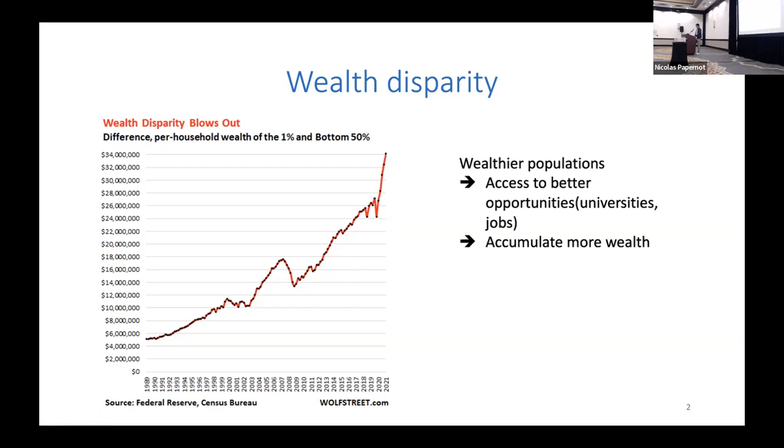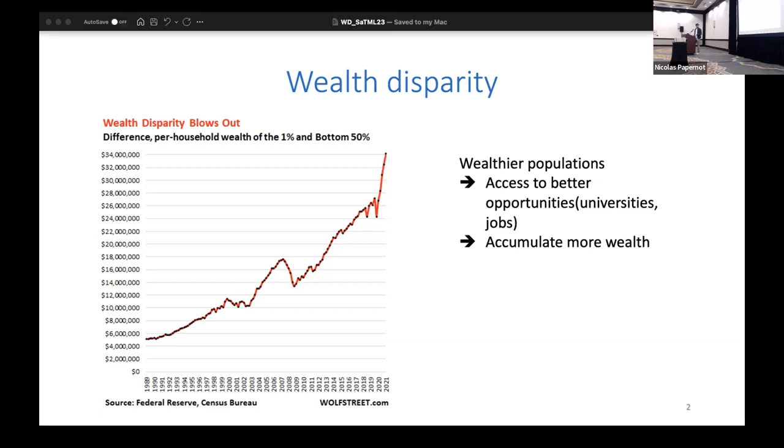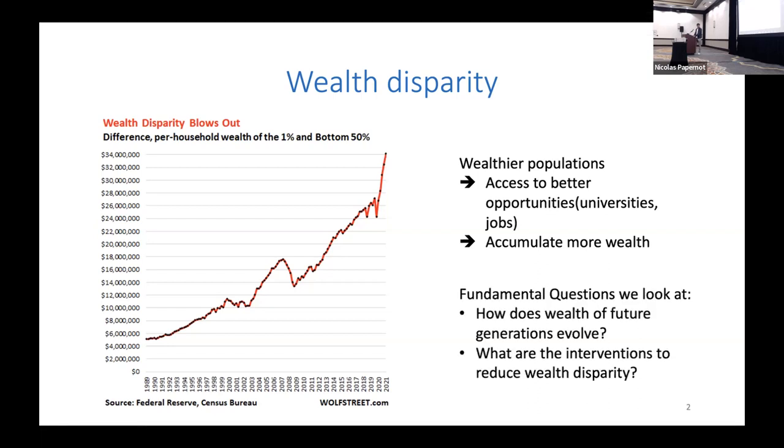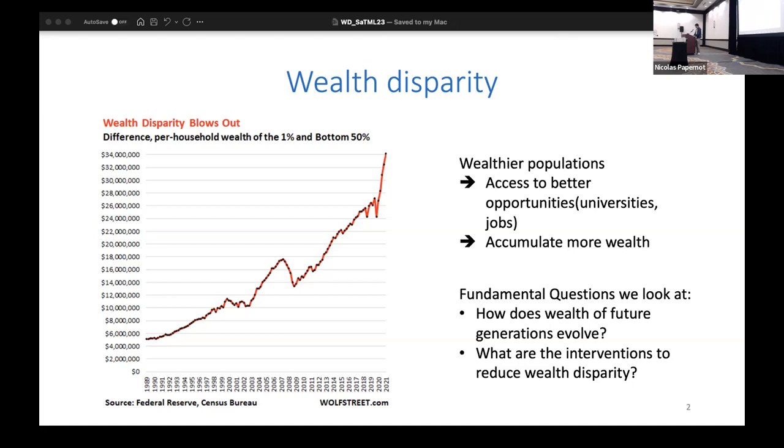One explanation for this is that wealthier populations have access to better opportunities like better universities and higher paying jobs, and as a result they can accumulate more wealth. The fundamental questions we want to look at are: how does the wealth of future generations evolve, and what kind of interventions can we make to reduce wealth disparity?